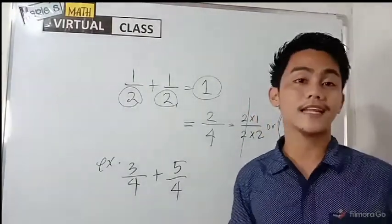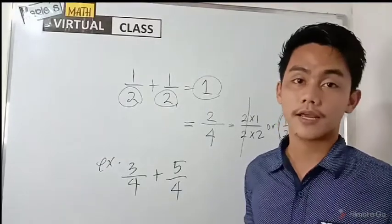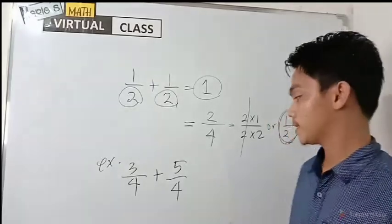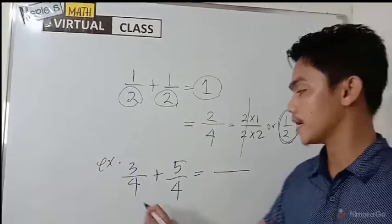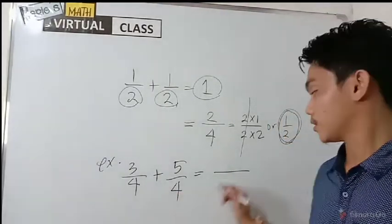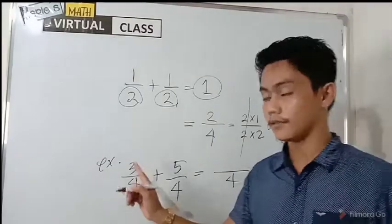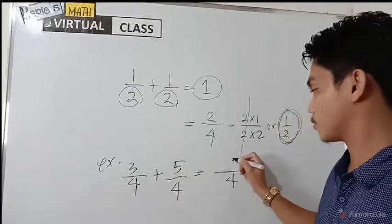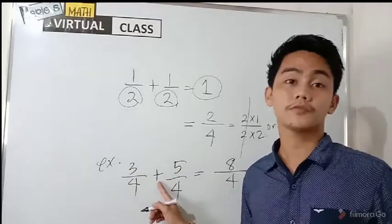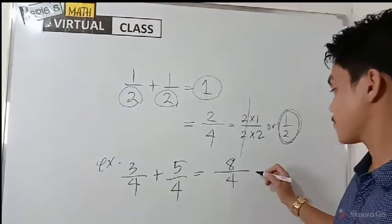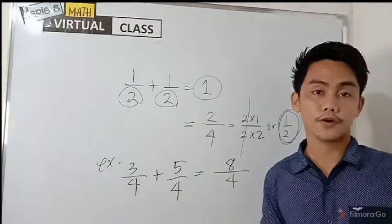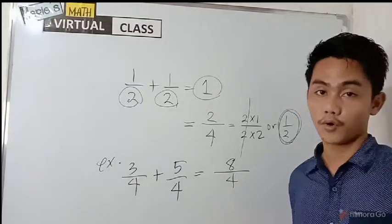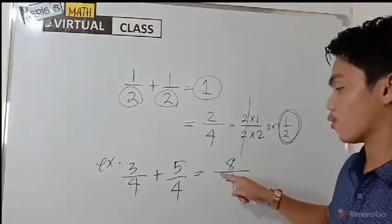What is the rule in adding and subtracting similar fractions? We simply copy the common denominator. And then we will add the numerators. Three plus five is equal to eight. If it is subtraction, you subtract the numerators. So therefore, our answer is eight over four.